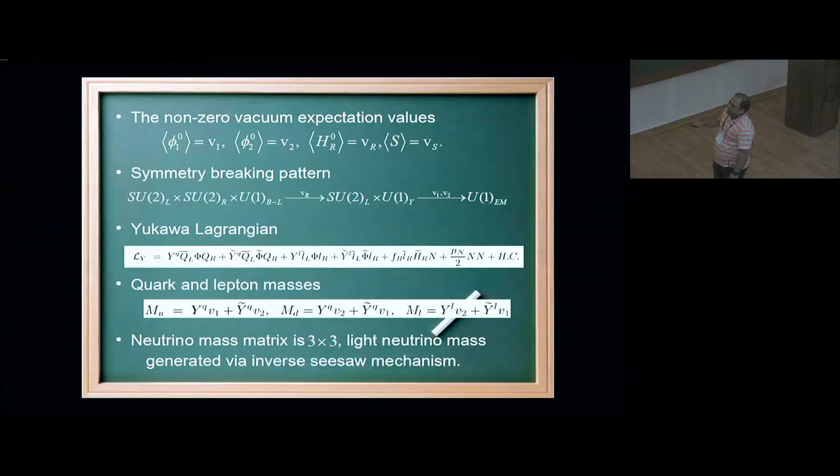The Yukawa Lagrangian is given here. The first two terms, this YQ and YQ-tilde, are responsible for the up and down type quark masses, and this YL and YL-tilde give mass to the charged leptons, plus they also generate some off-diagonal terms in my neutrino mass matrix. These two terms are essential for the neutrino mass. I haven't written the neutrino mass matrix here, but it will be a 3x3 matrix where I can get the light neutrino mass by inverse seesaw.